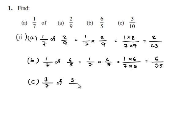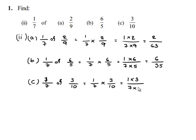Part c: 1/7 of 3/10 equals 1 multiplied by 3 upon 7 multiplied by 10, which gives 3 upon 70.